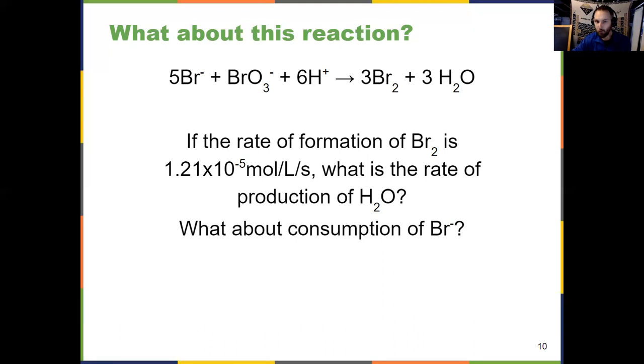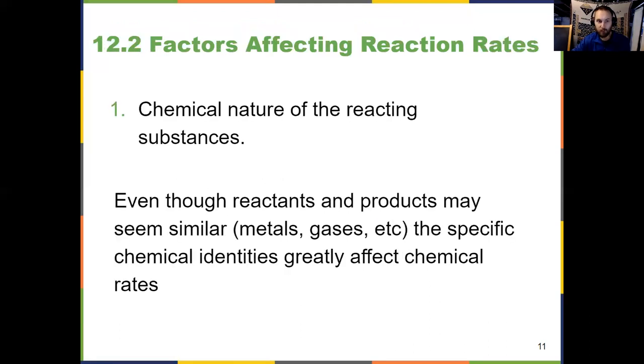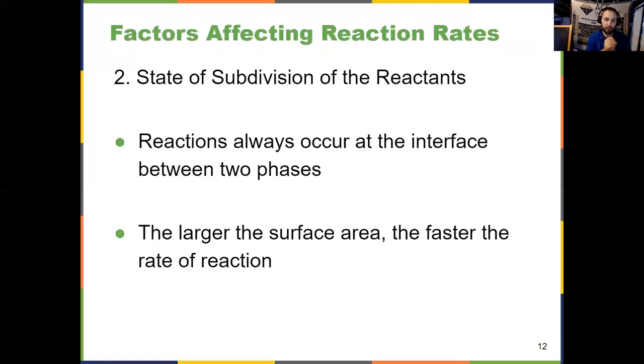So that wraps up 12.1. Let's now jump into 12.2, factors that can affect reaction rates. And I recommend you start writing all these down in a list, because they will all be tested. All the factors that can affect a reaction rate. Number one, chemical nature of the reacting substances. Even if a reactant in a product might seem similar to one another, the specific chemical identities affect chemical rates, which is kind of a no-brainer. What the chemical is affects the chemical rate. Common sense.